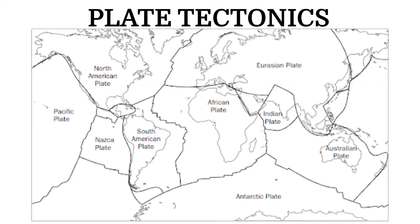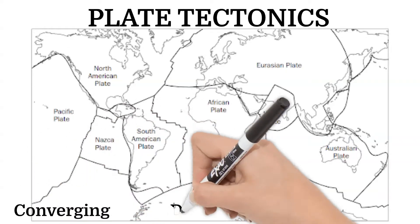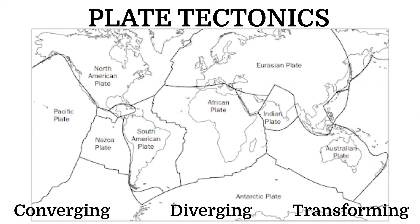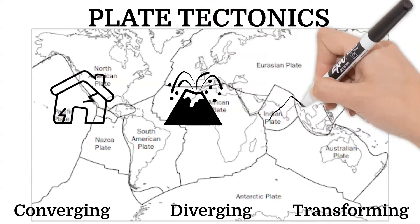In our last Science 7 video, we learned about the large sections of Earth's crust that are slowly moving, called tectonic plates. We also talked about the boundaries where different tectonic plates are touching, and remember their movement can cause things such as earthquakes, volcanoes, and mountains.